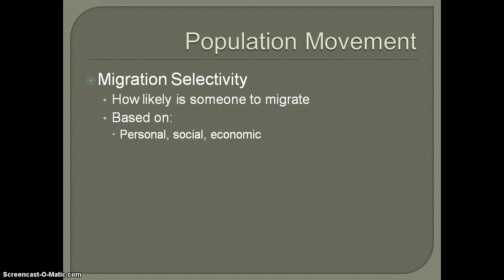When we talk about personal attributes, this refers to things like are they single or married, and how old are they — fairly young, middle-aged, or older? The social element is what part of society they're in — upper class or lower class. And economic looks at what economic position they're in — wealthy or poor. Typically, mostly younger single males are more likely to move, and those who have more money are more likely to move than those who have less.